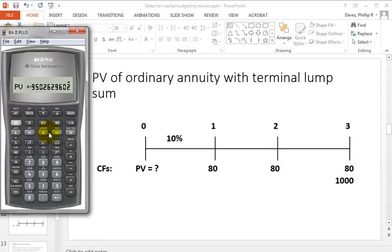And notice there's a negative sign on that present value. The BA2 Plus is answering the question, how much must I pay right now in order to receive $80, $80, $80, and then a final payment of $1,000 at the same time as that last $80? And the answer is you must pay $950.26 in order to receive that.